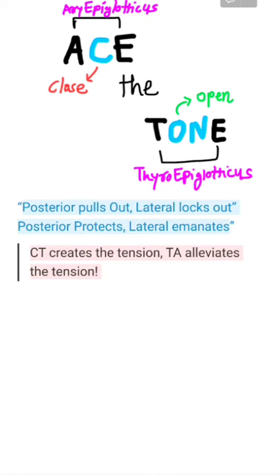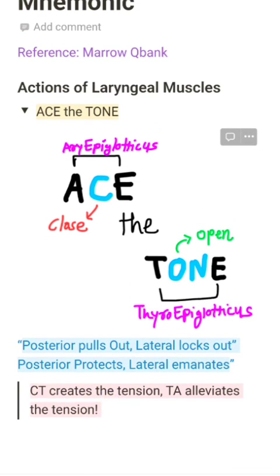In summary: aryepiglotticus closes the inlet and thyroepiglotticus opens the inlet of the larynx. Posterior cricoarytenoid abducts and lateral cricoarytenoid adducts. Cricothyroid tenses and thyroarytenoid relaxes.